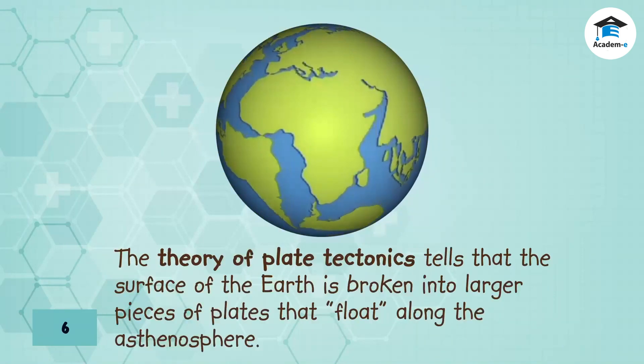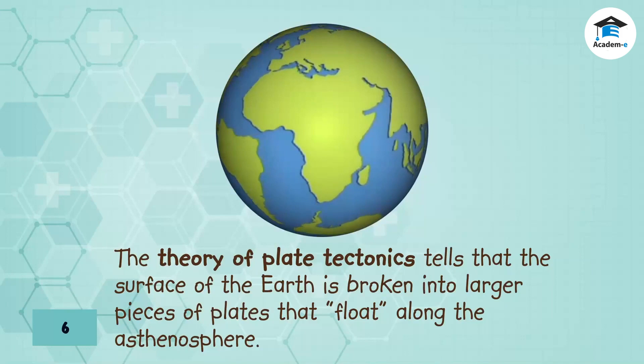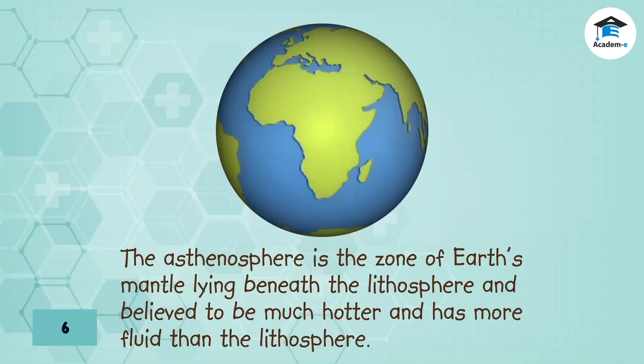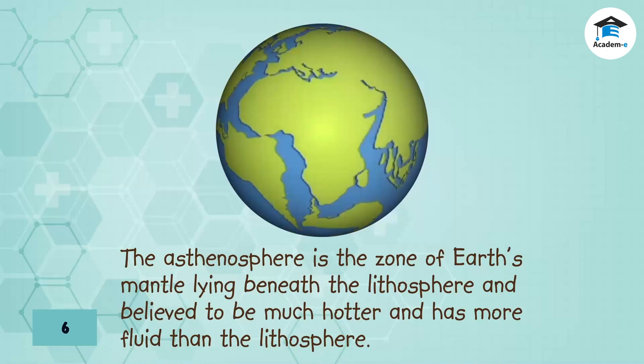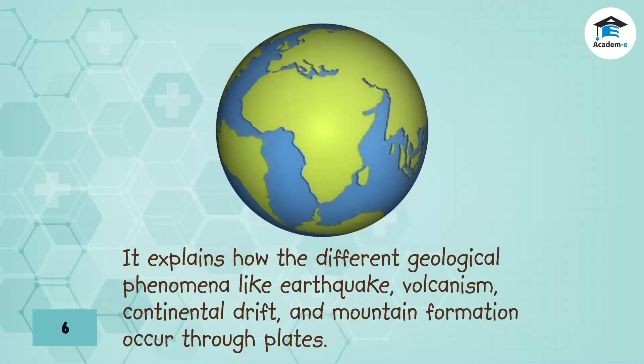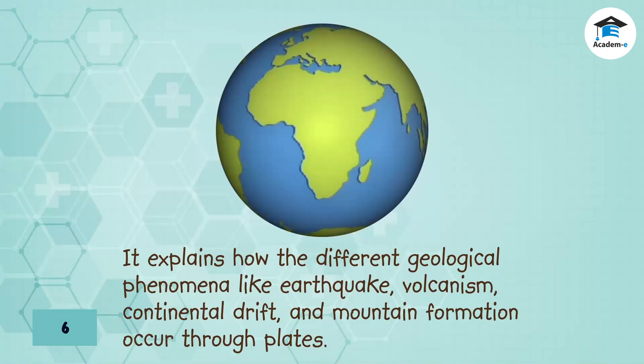The theory of plate tectonics tells that the surface of the Earth is broken into larger pieces of plates that float along the asthenosphere. The asthenosphere is the zone of Earth's mantle lying beneath the lithosphere and believed to be much hotter and more fluid than the lithosphere. It explains how different geological phenomena like earthquakes, volcanism, continental drift, and mountain formation occur through plates.